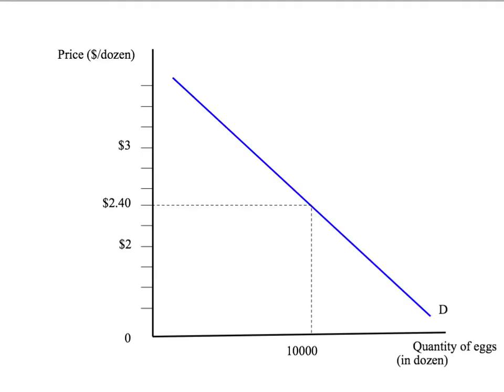Let's now apply this to a simple market — the market for eggs. We've got the quantity of eggs on the horizontal axis and the price of eggs on the vertical axis. We're going to start with a price of $2.40 and 10,000 dozen eggs being demanded. We're only going to look at the demand curve here because we're looking at the own price elasticity of demand. To work out the own price elasticity we need a percentage change in quantity and a percentage change in price, so let's put a change in price in and look at the change in quantity demanded.